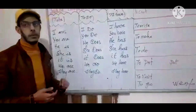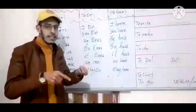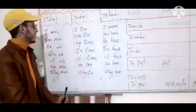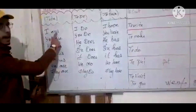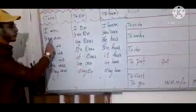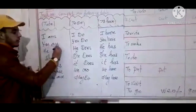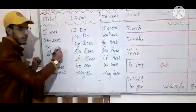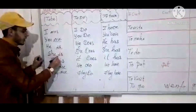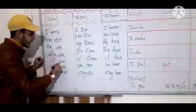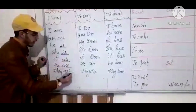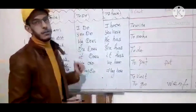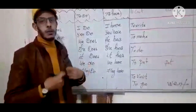We start with the verb 'to be' in the present simple: I am, you are, he is, she is, it is, we are, and they are.